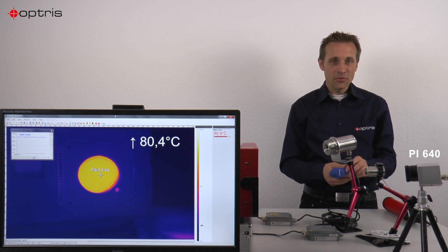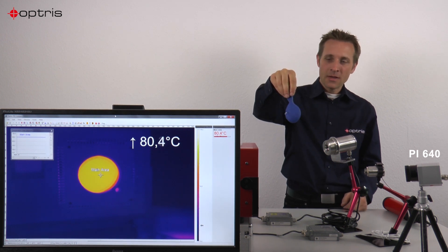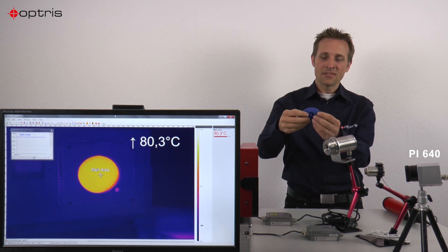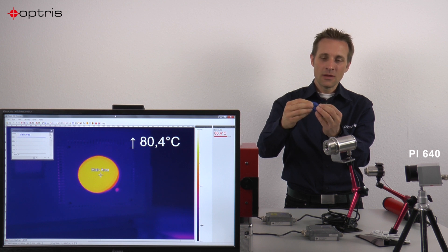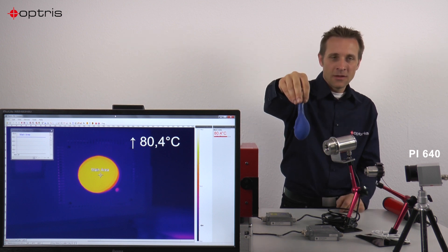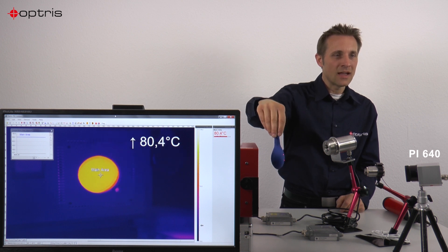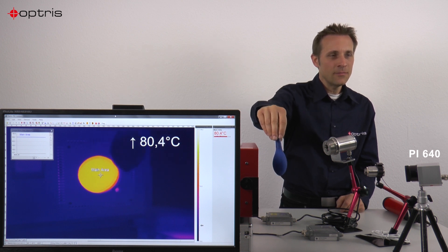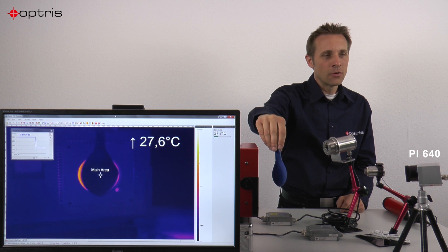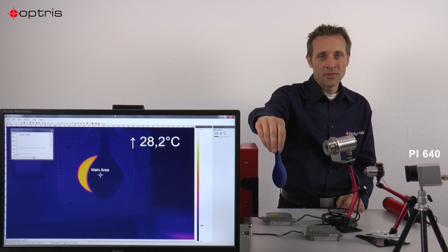Let's have a look at an experiment. I have here a balloon without air, and you can see that the thickness is more than 215 micron without air. If I position the balloon in front of my black body which has 80 degrees C, you can see that the balloon has a temperature of 28 degrees C. So the balloon is not transmissive in this case.